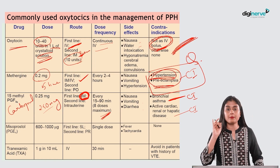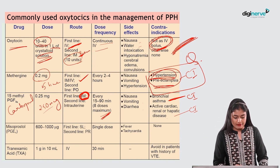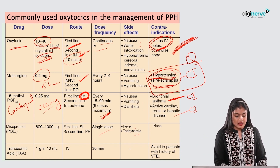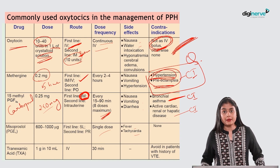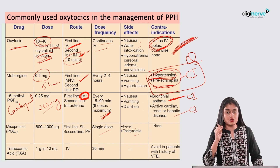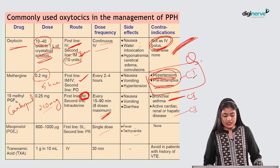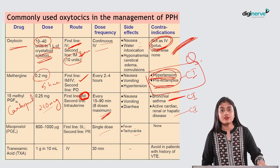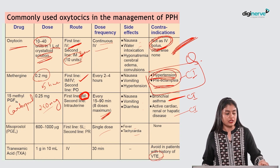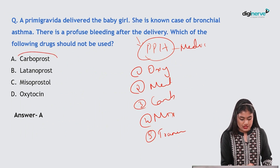Misoprostol has no contraindications and can be given sublingual or per rectal, from 600 to 1200 micrograms as a single dose; fever and tachycardia are its complications. Tranexamic acid is an anti-fibrinolytic agent — 1 gram IV in 10 mL dilution every 30 minutes; avoid in venous thromboembolism but it is not absolutely contraindicated.